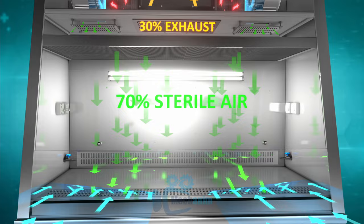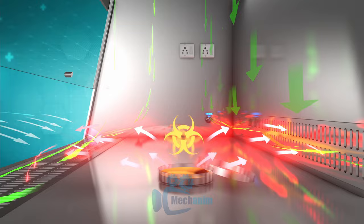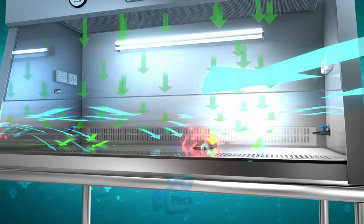Seventy percent of HEPA filtered air enters the cabinet from above and flows down on work surfaces under unidirectional flow. The air supply to the inside chamber is evenly distributed around the work surface with laminar flow, which prevents cross-contamination between samples.